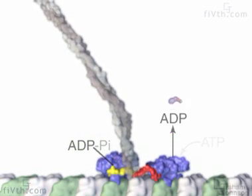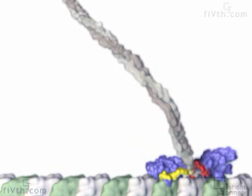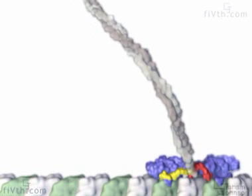And the cycle repeats. In this way, kinesin dimers move processively, step by step, along the microtubule.